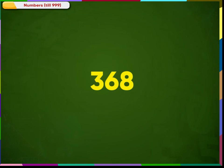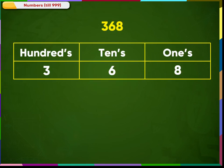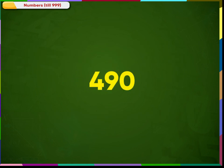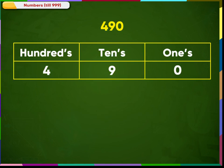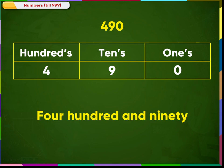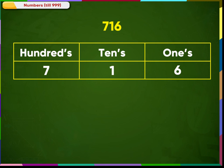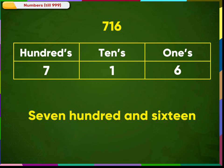Let us see few more numbers how they are written in words and numerals. In words, we write this number as three hundred sixty-eight. The number 490. In words, we write this number as four hundred ninety. The number 716. In words, we write this number as seven hundred sixteen.